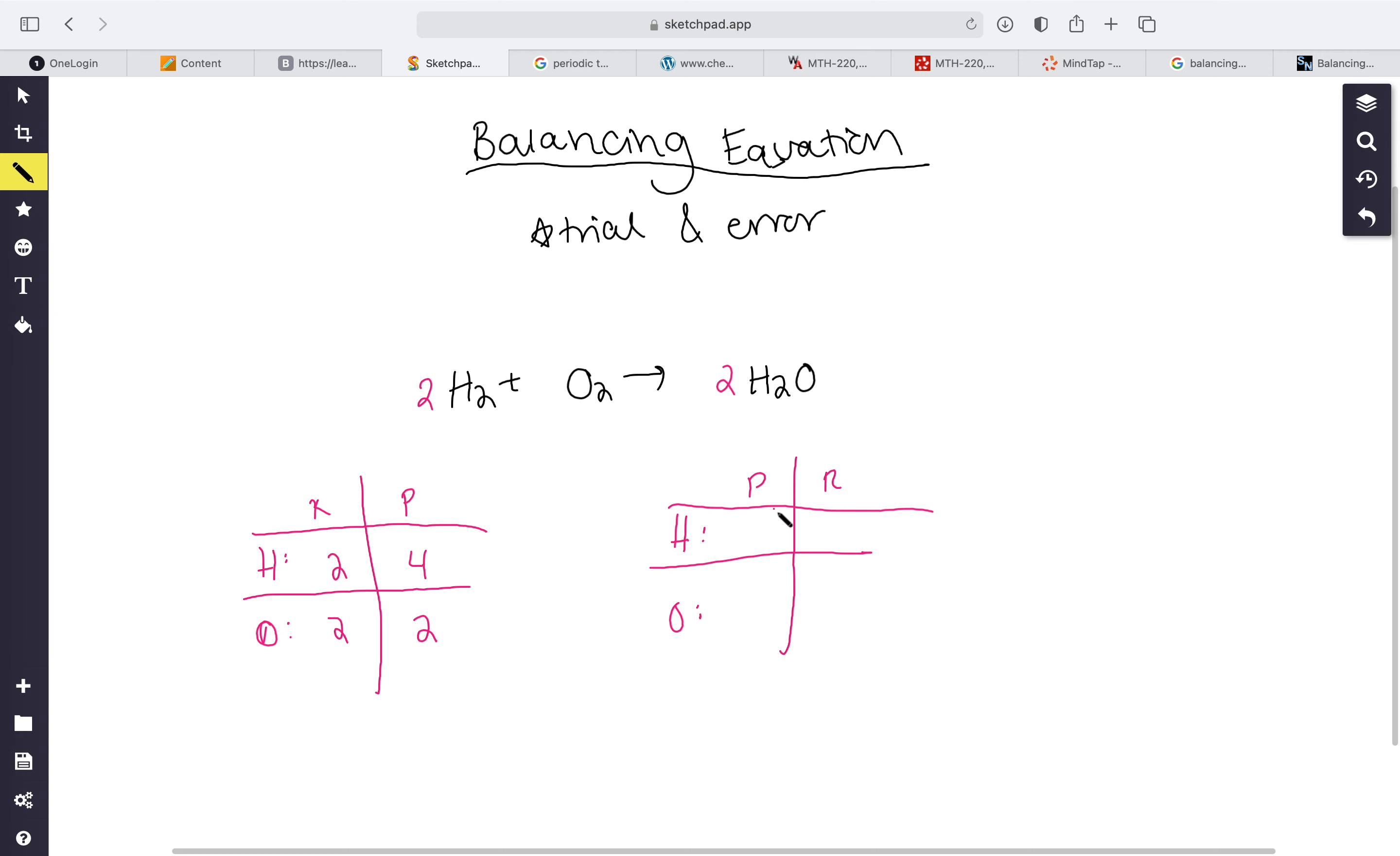Let's see, hydrogens we have four in the reactants, we have four. Oxygen we have two, and the products we have two. So that would be our balanced equation.